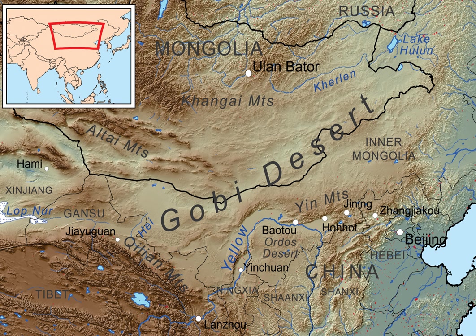In Mongolia, grasslands have been degraded by goats, which are raised by nomadic herders as a source of cashmere wool. Large copper deposits are being mined by Rio Tinto Group. The mine was and remains controversial. There was significant opposition in Mongolia's parliament to the terms under which the mine will proceed, and some are calling for the terms to be renegotiated.